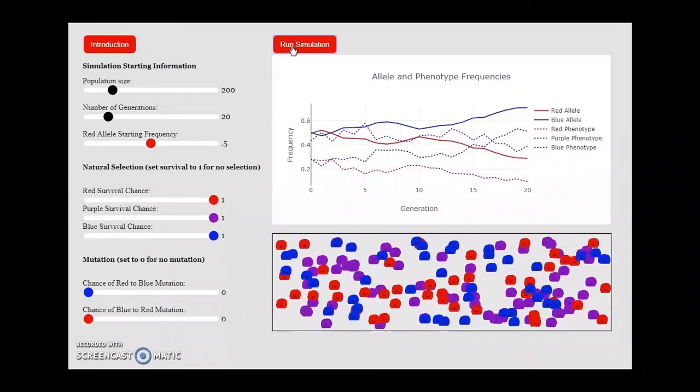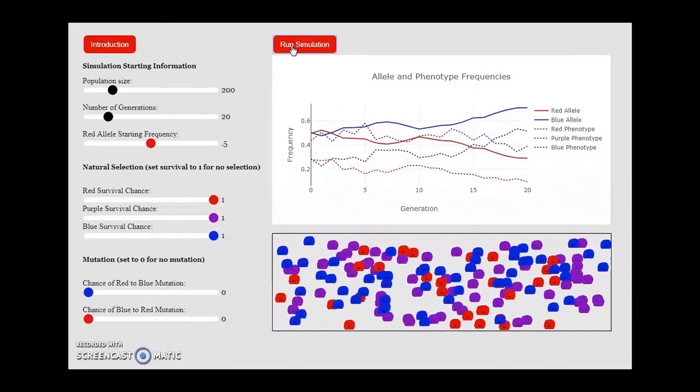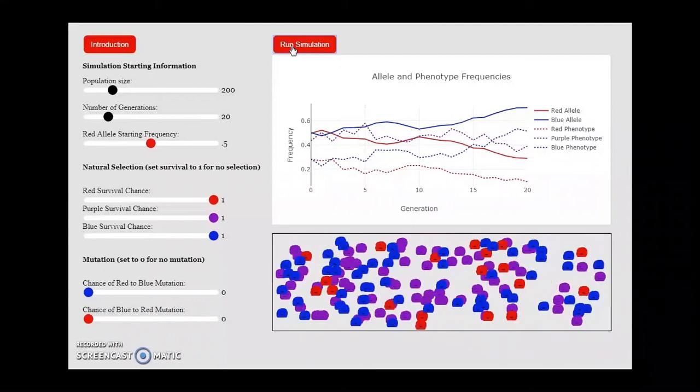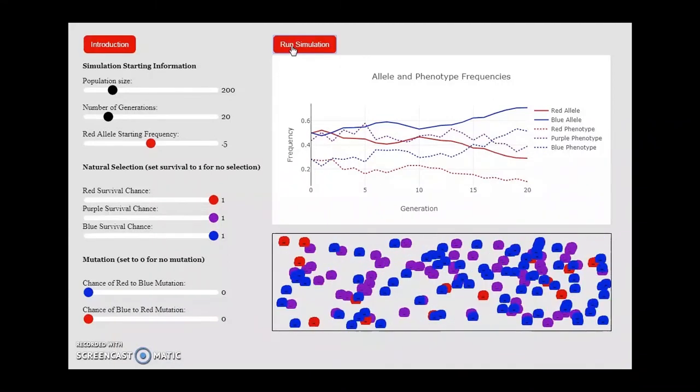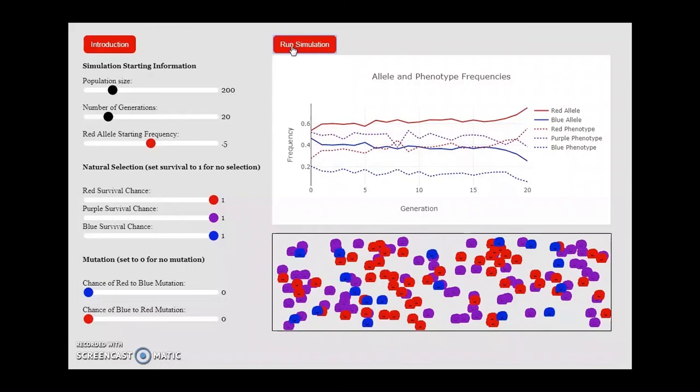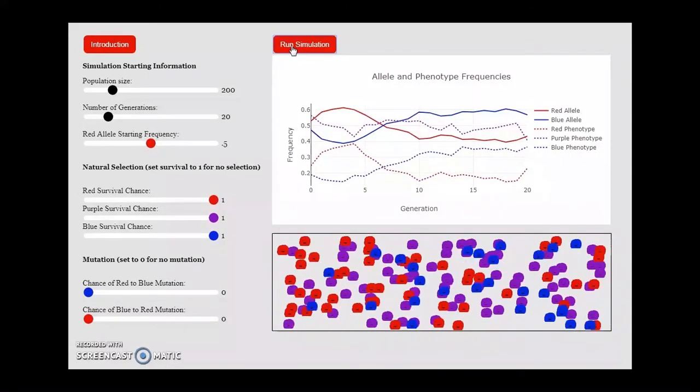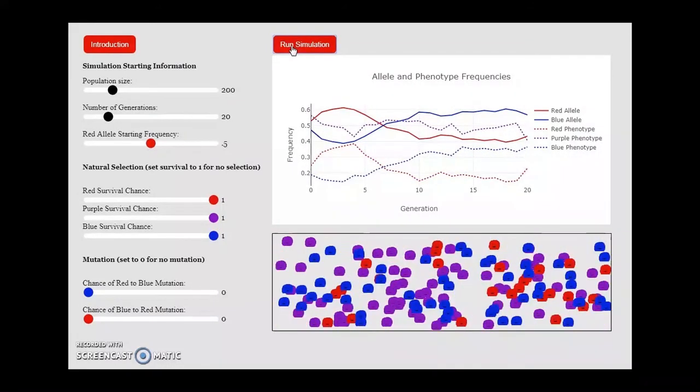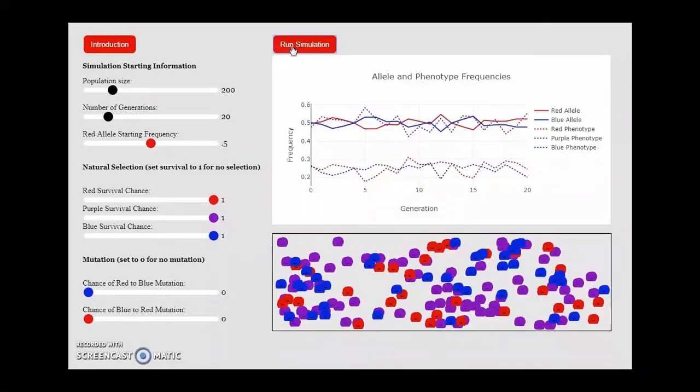Finally, if you are using this to test if certain parameters are likely to lead to evolution, remember that one benefit of simulations is the ability to run many trials relatively quickly. The more trials you run, the more clear a picture you can get of the range of possible results.